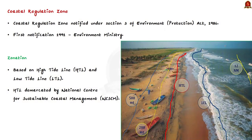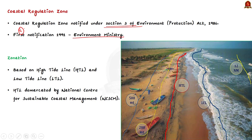In the year 1991, the Union Ministry of Environment notified the Coastal Regulation Zone notification. What does the notification do? It declares certain coastal stretches as Coastal Regulation Zone under Section 3 of the Environment Protection Act 1986. This is what the Coastal Regulation Zone notification is about.